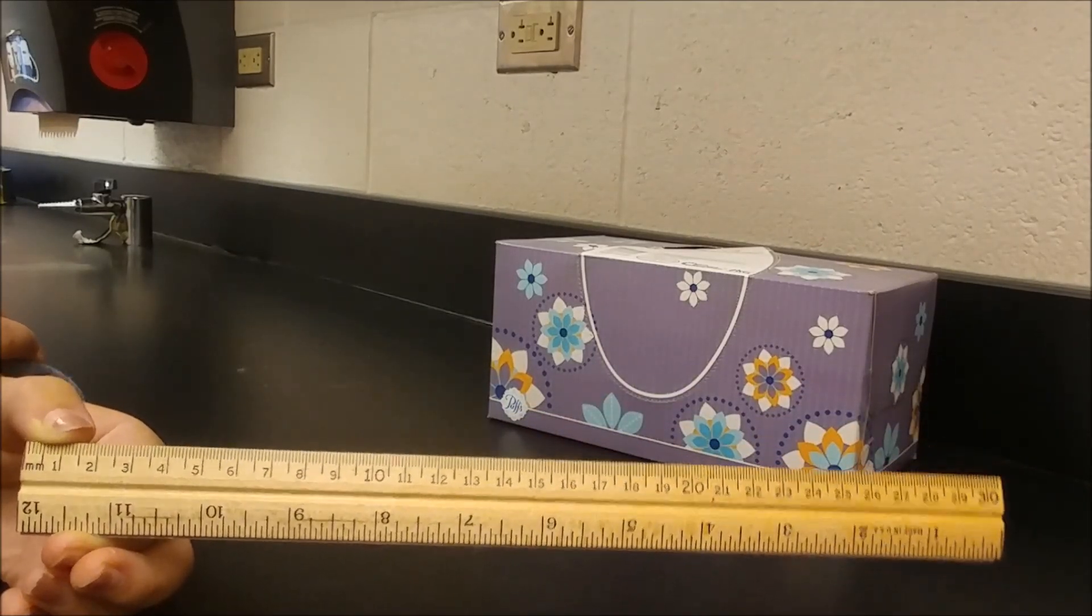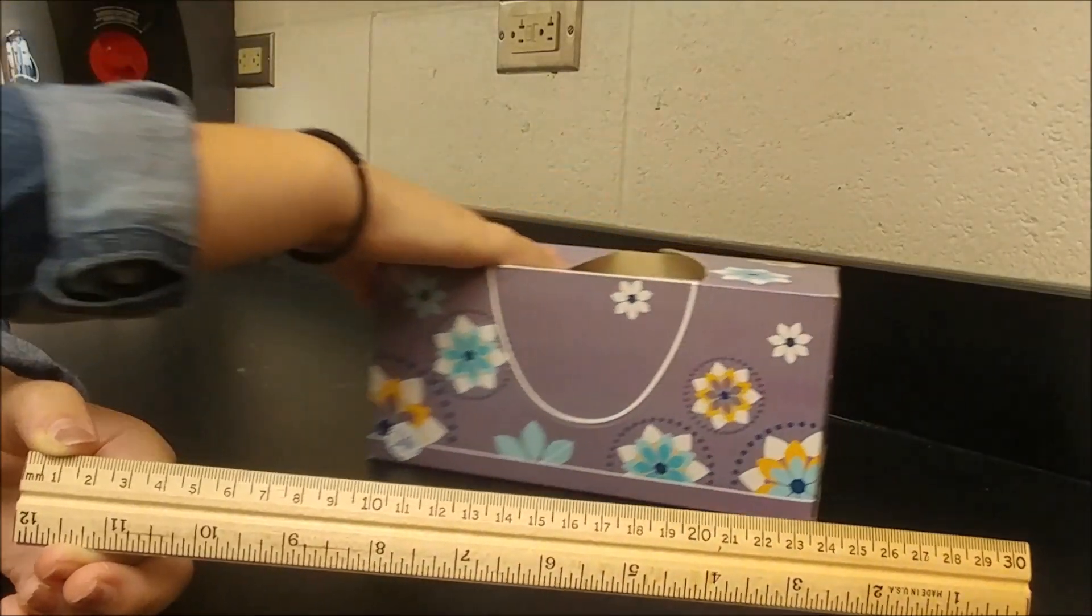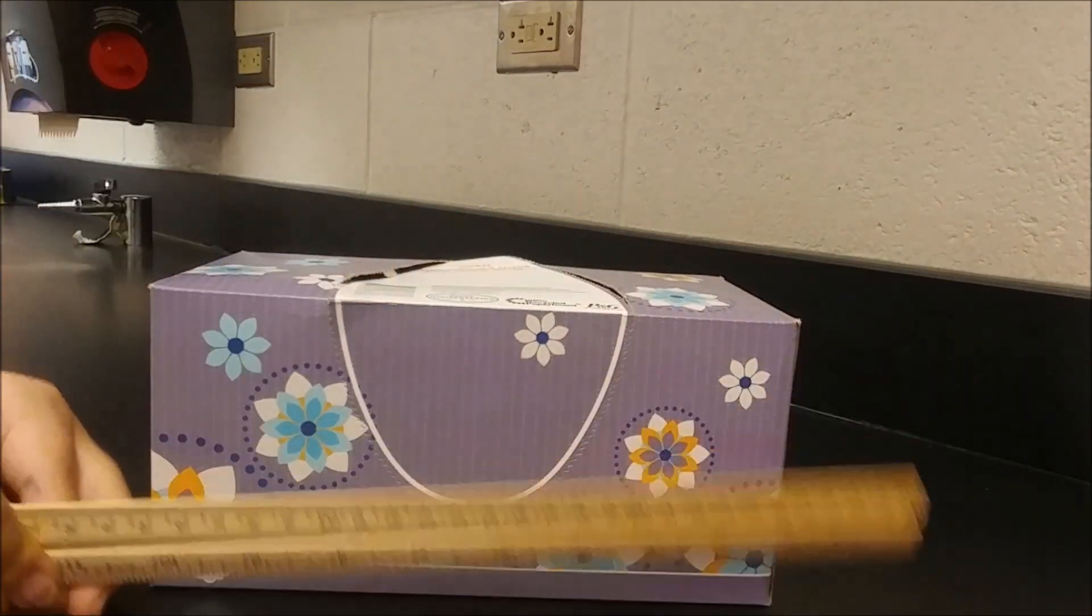So here we have a tissue box. To measure the length, line up the zero mark of the ruler with the edge of the box.